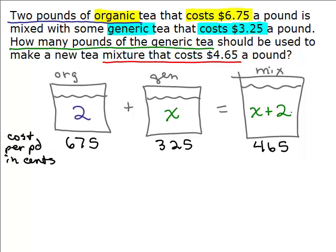You do not add the money together. You know that 675 plus 325 would be 1,000 — it shouldn't cost $10 a pound when you mix the cheap and the organic tea together. It should be some price in between: some number between 325 a pound and 675 a pound.